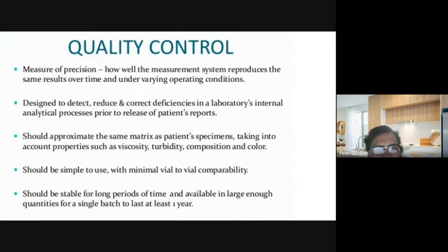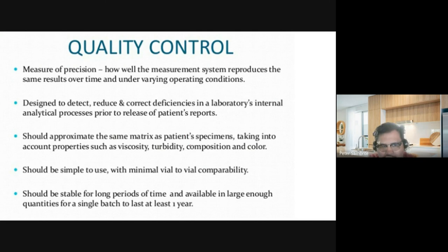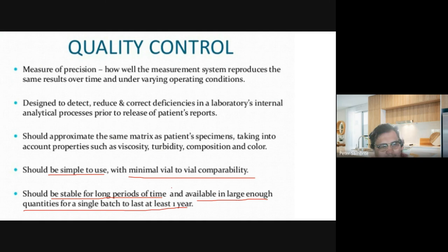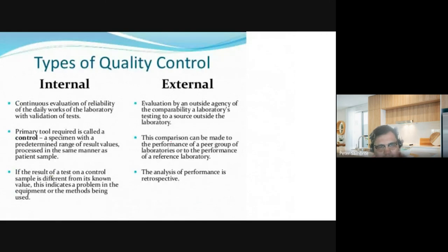Your quality control measures precision — how well the measurement system reproduces the same results over time and under varying operating conditions. It is designed to detect, reduce, and correct deficiencies in a lab's internal analytical process. Controls should be simple to use with minimal vial-to-vial variability, should be stable for long periods, and available in large enough quantities for a single batch to last at least one year. There are two types of QC: internal and external.